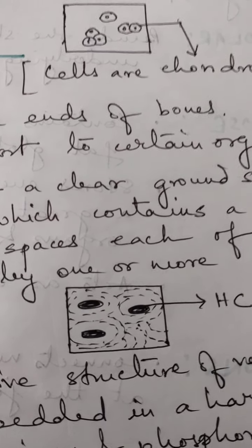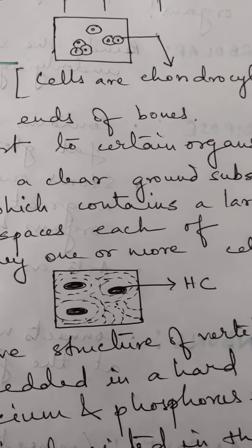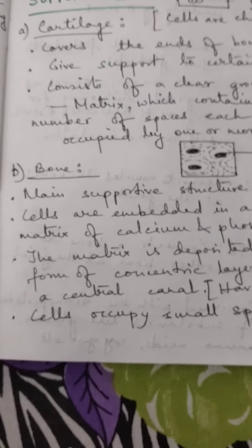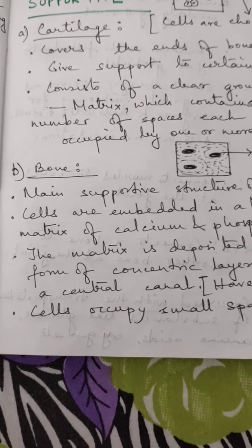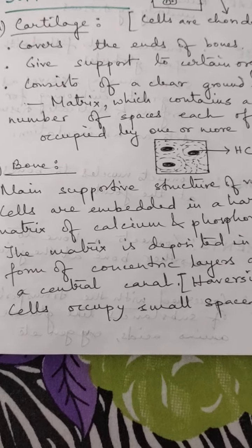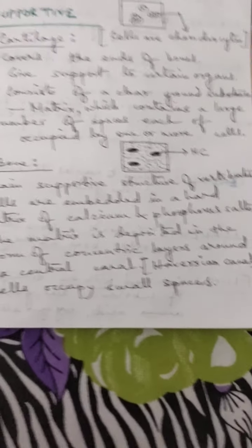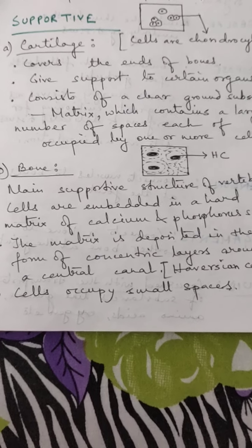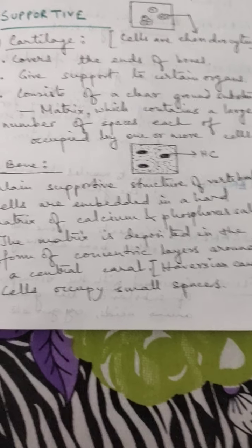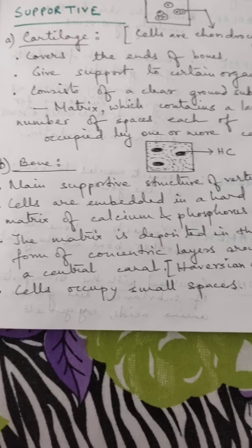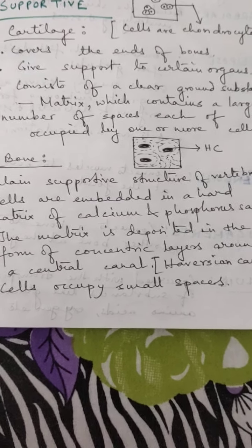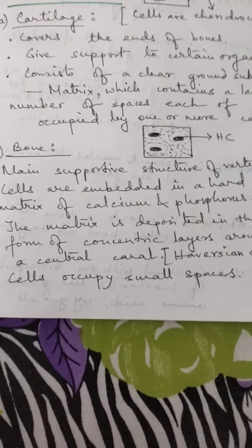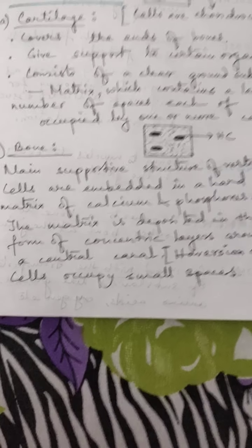Next is bone. Bone is a very hard substance and is the main supportive structure of vertebrates. Cells are embedded in a hard matrix of calcium and phosphorus salts. The matrix is deposited in the form of concentric layers around the central canal known as the haversian canal.